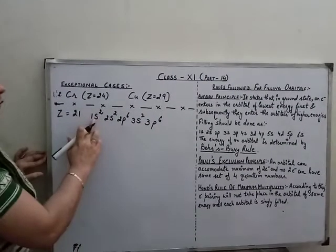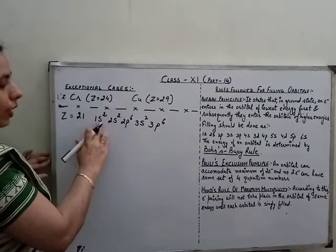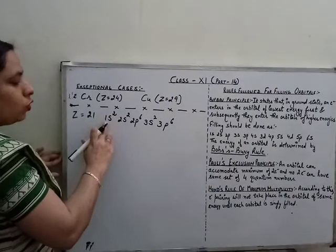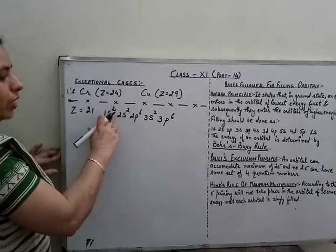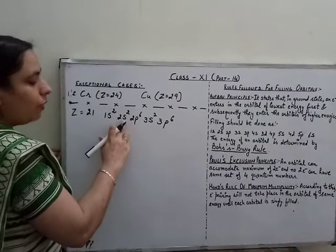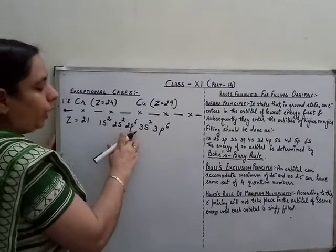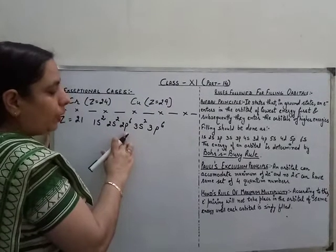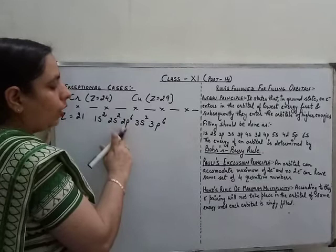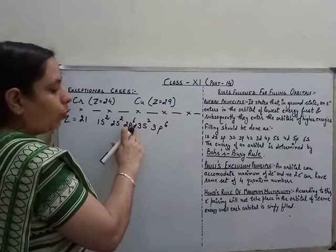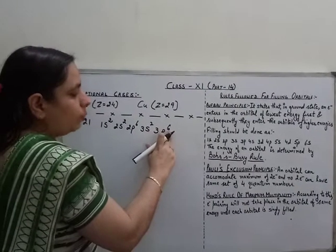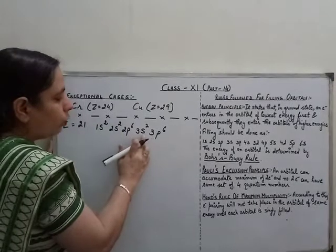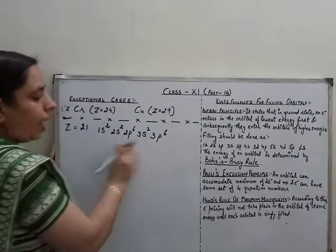In the first shell there is sub-shell s, with only 1 orbital. Each orbital can accommodate 2 electrons, so the first shell accommodates 2 electrons. For 2s, that is 2s2. In the case of 2p, the p sub-shell contains 3 orbitals: px, py, and pz. Each orbital accommodates a maximum of 2 electrons, so the p sub-shell can accommodate 6 electrons. Similarly for 3s, 2 electrons; for 3p, 6 electrons. Total: 2+2+6+2+6 = 18 electrons accommodated.